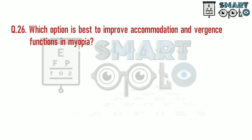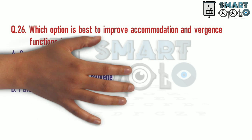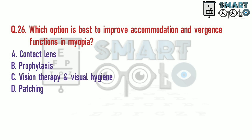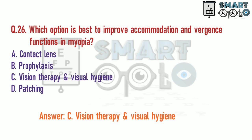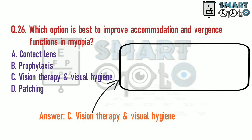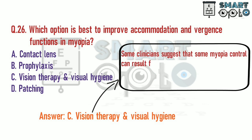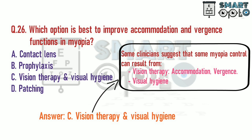Q26. Which option is best to improve accommodation and vergence functions in myopia? A. Contact lens. B. Prophylaxis. C. Vision therapy and visual hygiene. D. Patching. Some clinicians suggest that myopia control can result from vision therapy focusing on accommodation and vergence, and visual hygiene focusing on improving reading conditions and lifestyle.